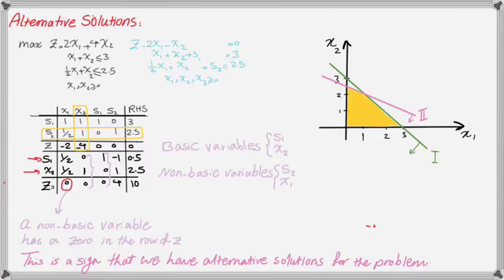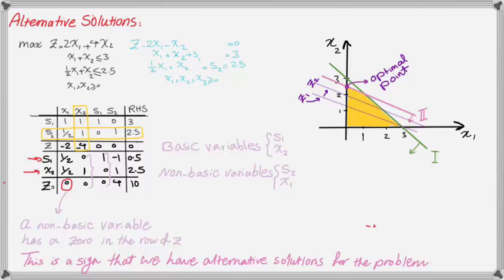Let's look at this problem graphically. I plotted the constraints and show the feasible region. To find the optimal solution, I draw the objective function line and see what corner it hits as it exits the feasible region. If you don't know how the graphical method works, please refer to the video on the graphical solution. As I move the objective function line in the direction of maximization, instead of hitting just one point, I'm hitting a portion of a line — because the objective function line and constraint 2 are parallel; they have the same slope.